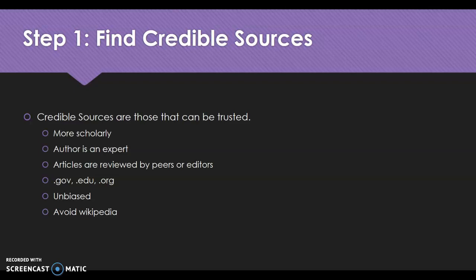Credible sources follow a list of characteristics. They're scholarly, the author is generally an expert, and there's probably some author information so you can see who wrote it. Articles are often reviewed by peers or editors. You may have a website that ends in .gov, .edu, or .org — those are probably 95% of the time credible.